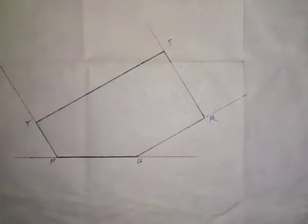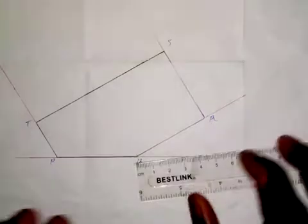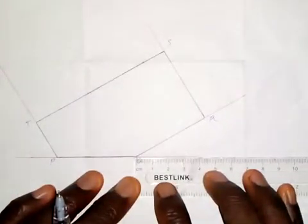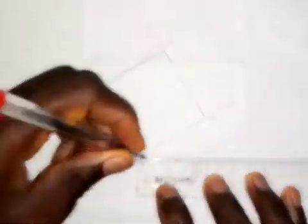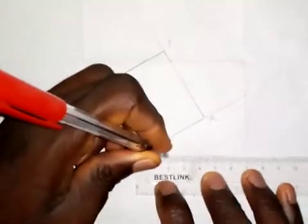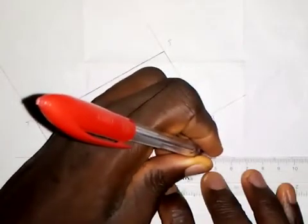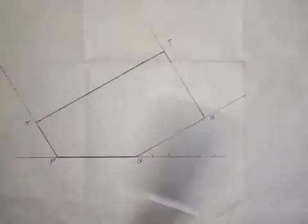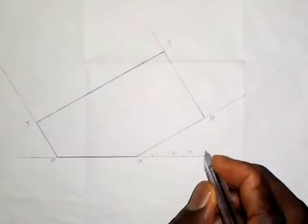We are asked to construct a similar pentagon of ratio 5 to 3 in area to the given pentagon. We are going to take some points on the extended line PQ at 10-millimeter intervals — points 1, 2, 3, 4, and 5. Then draw a vertical line from point Q downward.